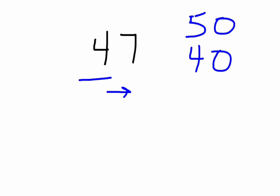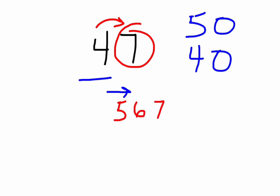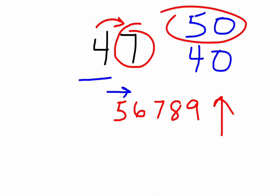To make our determination, we're going to look at the digit directly to the right of the underlined digit — in this case, it's the digit in the ones place. And we're going to ask ourselves a very simple question: is that digit a five, six, seven, eight, or nine? If it is a five, six, seven, eight, or nine, we will round up, and we would select 50 as our answer.